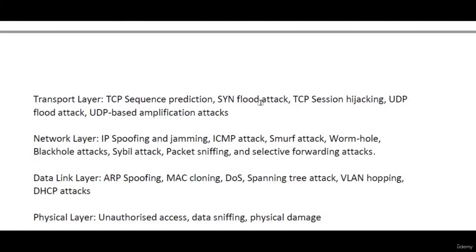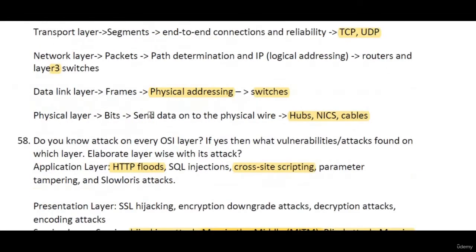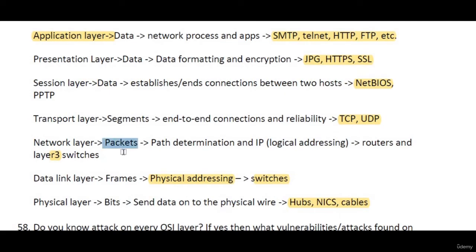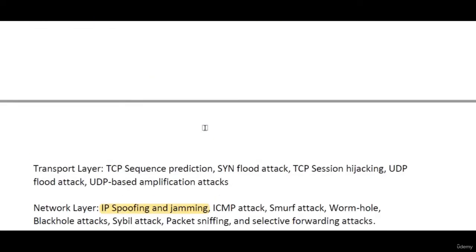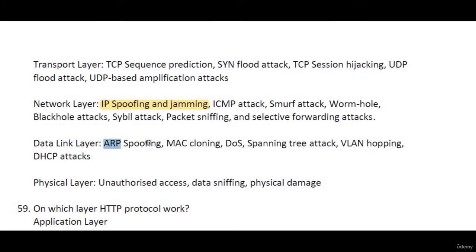On the Transport layer, TCP sequence prediction, SYN flood, and UDP-based amplification attacks can happen. On the Network layer, IP spoofing and jamming can happen — this is where we get the logical IP address. Black hole attacks, sybil attacks, and packet spoofing can also happen at the Network layer. On the Data Link layer, ARP spoofing can happen because that is where we get the MAC address. MAC cloning is also a Data Link layer attack.